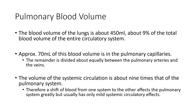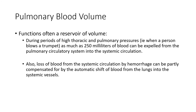It's also important to acknowledge that if we have a significant shift in systemic circulation, we can have significant effects on the pulmonary system. The pulmonary blood volume, which typically is about 450, can be reduced down to 250 in situations where we have serious hemorrhage. So pulmonary blood volume does operate as a reservoir to maintain systemic perfusion and circulation.